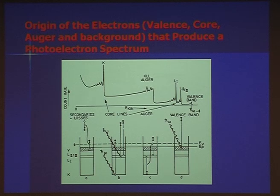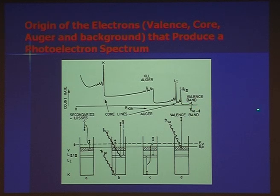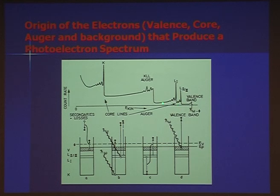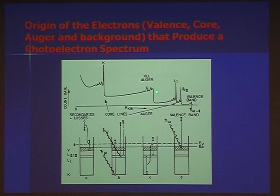Here's an XPS spectrum. It starts at high kinetic energy; you pick up the valence band electrons — some people make use of those, but it's not common. Then you pick up these core level electrons and some Auger electrons. And if you look closely, the background jumps up in steps each time. This is because electrons that escaped from deeper down but lost their energy contribute to this background — electrons from progressively deeper layers adding up cumulatively, creating a step background in most spectra.